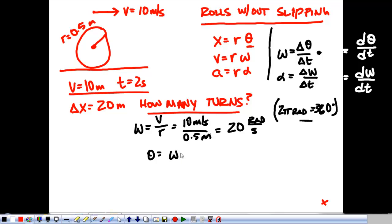Our theta is going to be omega times time or 20 radians per second times 2 seconds. Second goes away and that leaves me with 40 radians. That's one way to do it.